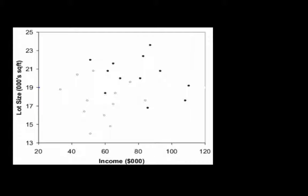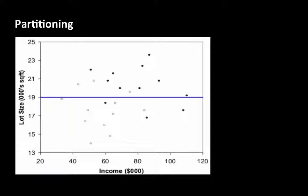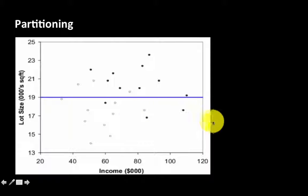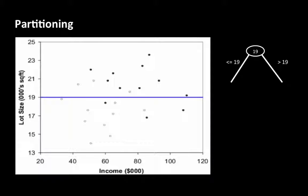The dark circles represent owners and the unfilled circles represent non-owners. We are trying to arrive at a set of rules that will classify the cases into owner or non-owner. If we construct the tree, it could turn out that the first partitioning happens at the lot size of 19. All the cases less than or equal to 19 go to one side and all the cases greater than 19 go to the other side. The root node consists of all the cases, and the partitioning divides them into two parts based on lot size.